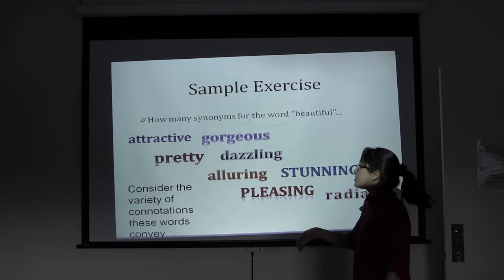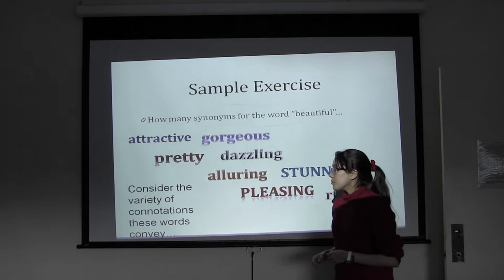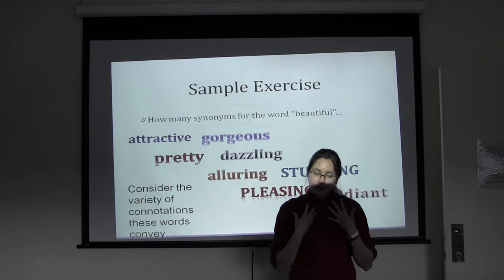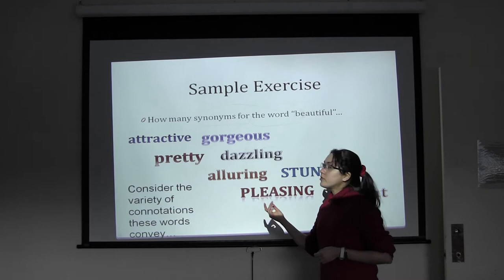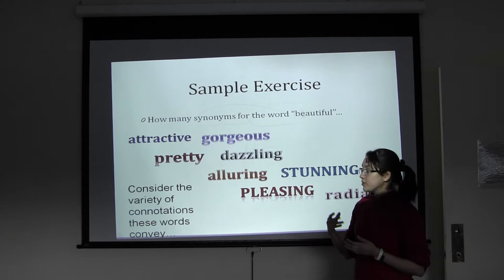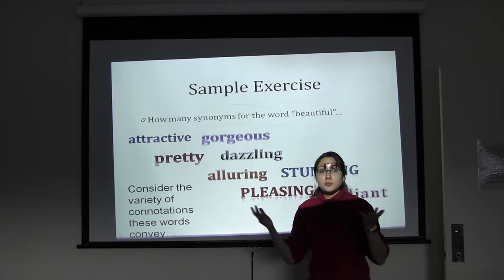One thing to consider when looking at these synonyms is the variety of connotations they carry. Take 'dazzling,' 'alluring,' and 'pleasing' — think about the difference. Dazzling could be glitzy, sparkly, glamorous — think disco balls and projecting light. Something pleasing might be pleasing to the taste, so palatable or delectable, or pleasing to the touch — soft and warm. Something alluring is attractive, sometimes in an almost dangerous way. They're all synonyms for 'beautiful,' but none of them mean exactly the same thing as 'beautiful.' That's the beauty of the English language.